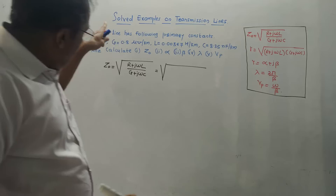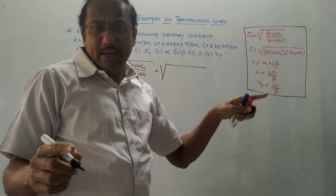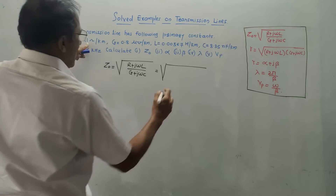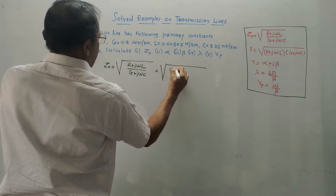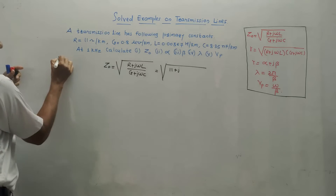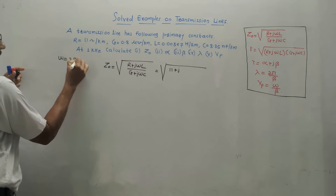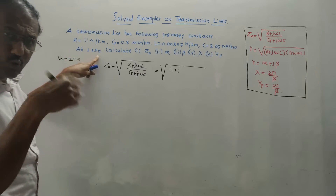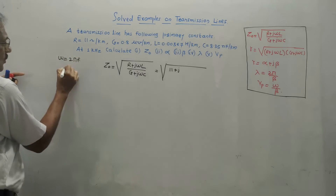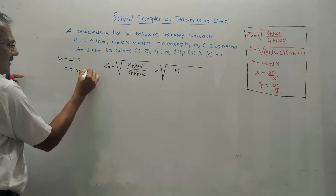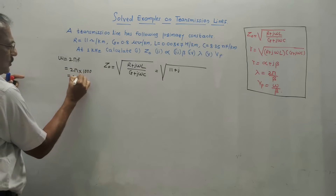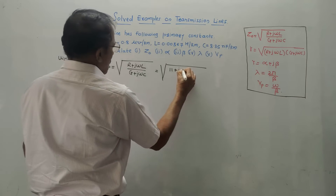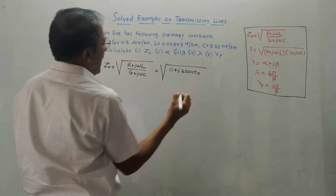One important thing: the basic unit of transmission line parameters is per kilometer. You don't have to convert it to meters — keep it as is. So R is 11 + j·ωL. Omega is 2πf. f is 1 kHz, but you need to convert to hertz. So it becomes 2π × 1000 Hz = 2000π. This is the value of omega. So the term is j·2000π × L.